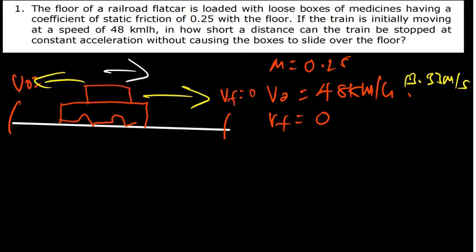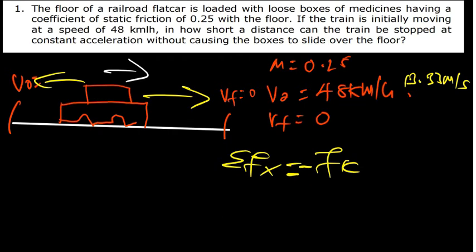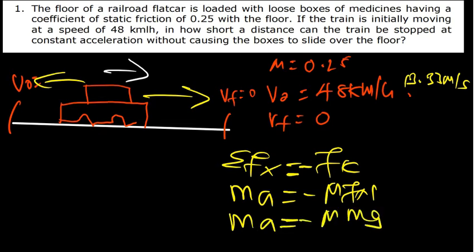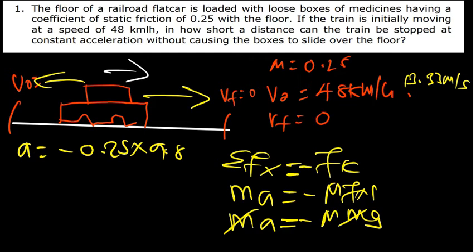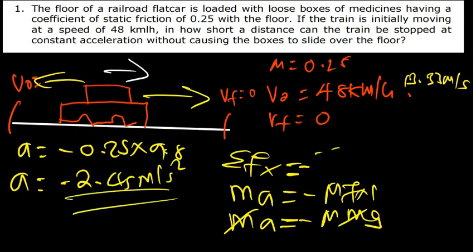According to Newton's second law, mass times acceleration equals negative mu times normal force. The normal force is mg, so mass times acceleration equals negative mu times mg. We cancel the mass and get acceleration equals negative 0.25 times 9.8, which gives us negative 2.45 meters per second squared.